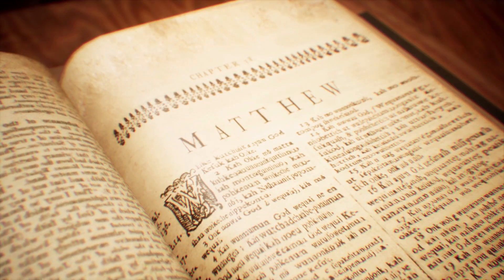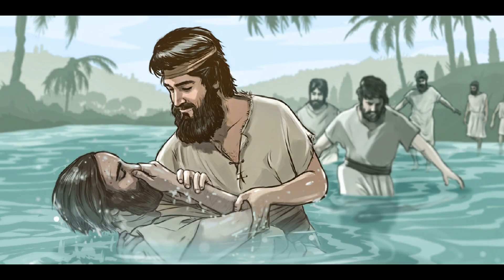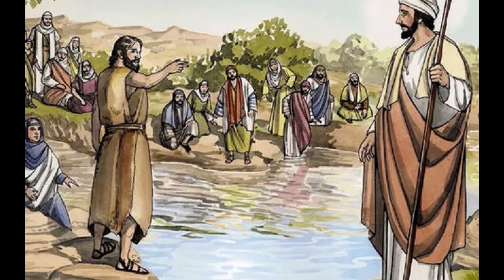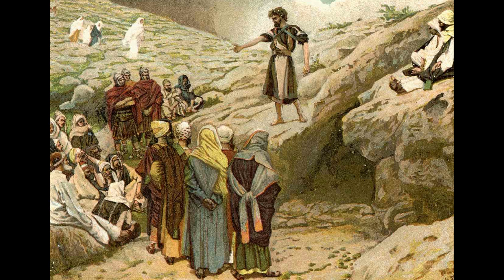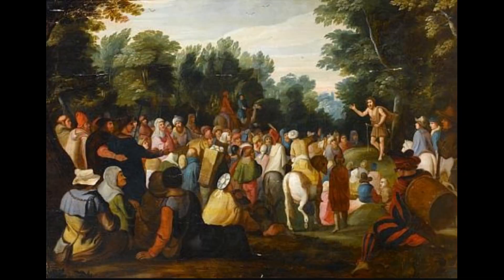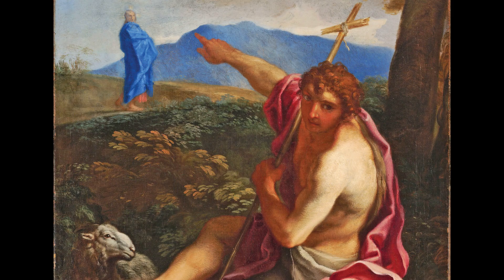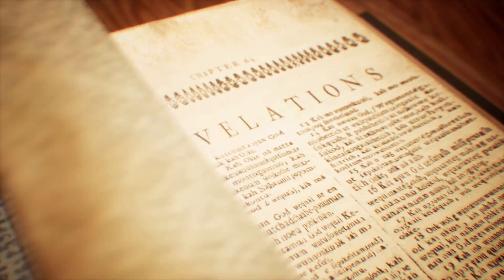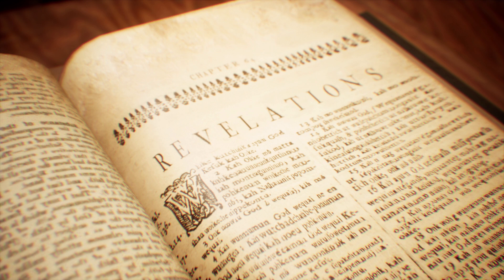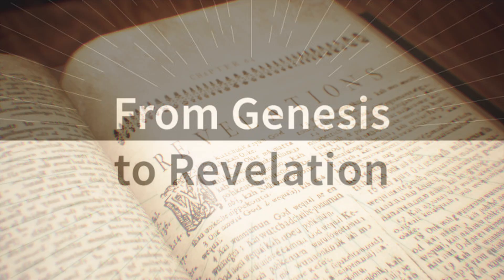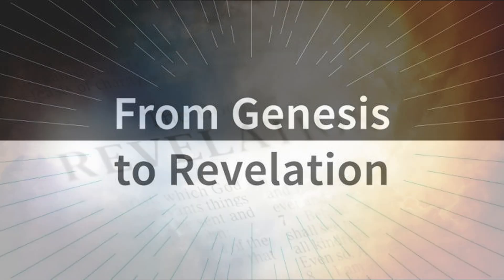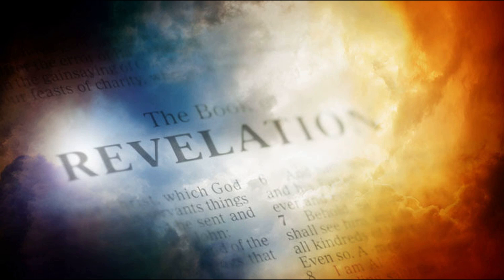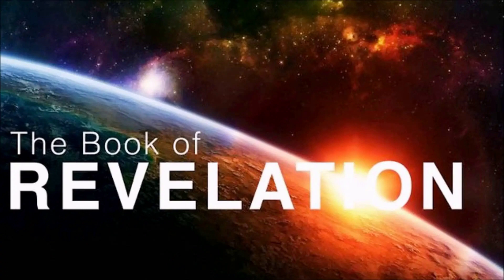Then we move into Matthew, one of the earliest books written in the New Testament. Matthew introduces us to Jesus as King, and John the Baptist, who tells the Jews they need to change their mind about how to enter the kingdom — it's not through their earthly lineage but through believing on Jesus Christ. Moving through Matthew, one of the synoptic gospels, right through to Revelation, you have an excellent picture of biblical history from the beginning of creation all the way through to how things are going to end, with Revelation being a prophetic book about future events.